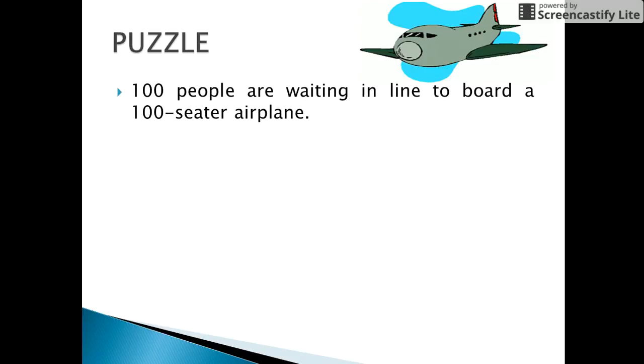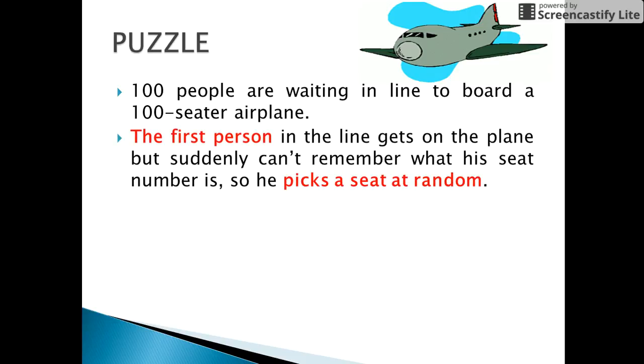In this puzzle, 100 people are waiting in line to board a 100-seater plane. The first person in line gets on the plane but suddenly he forgets what his seat number was. So he picks a seat at random.